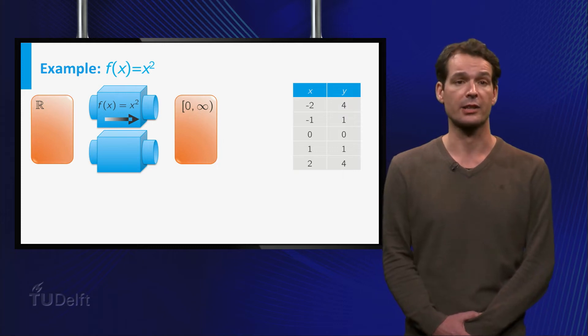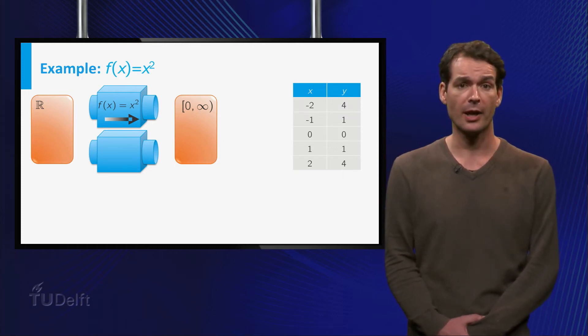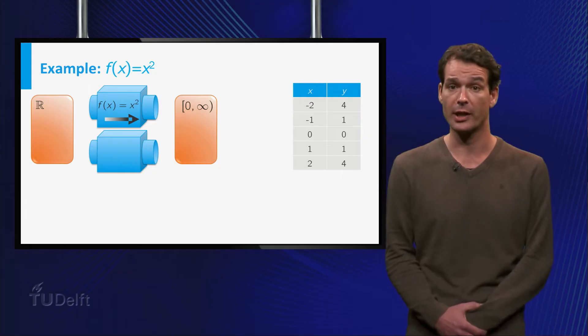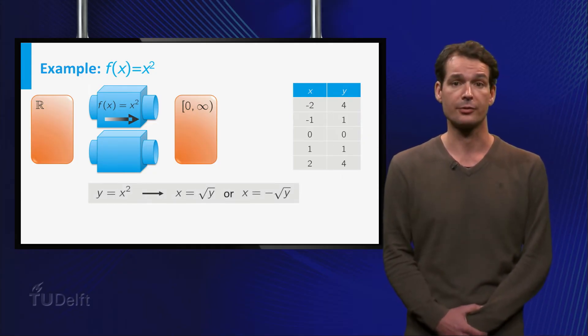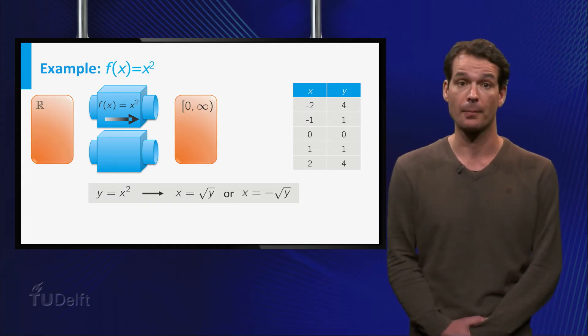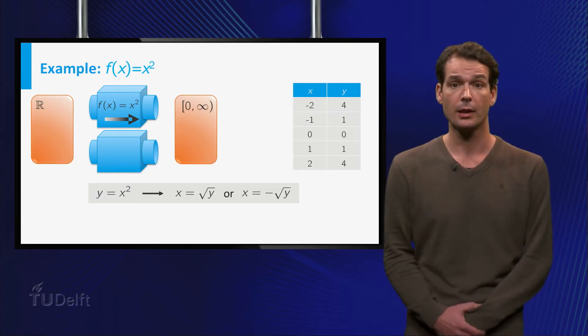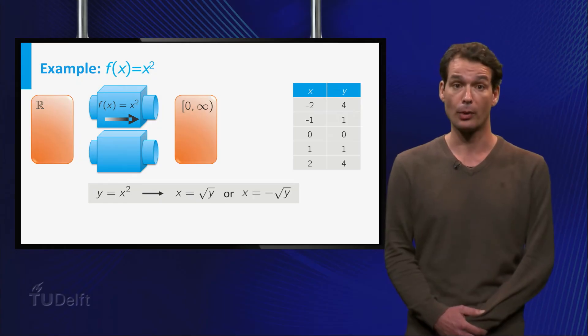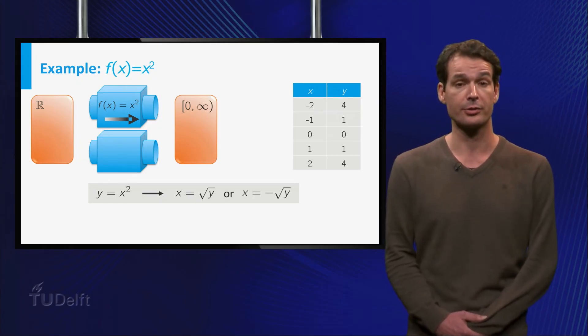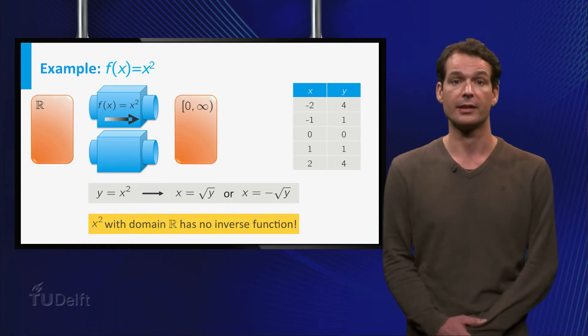Let us look at the function X squared. To find the inverse function, we must solve the equation Y equals X squared for X. This gives two solutions, square root of Y and minus the square root of Y. And indeed you can see that for example Y equals 4 occurs twice in the table. So if we only know the value of Y, we cannot know what the original value of X was. This means that there is no inverse function for X squared.